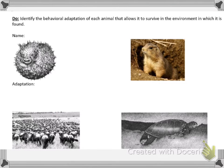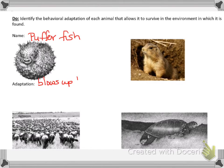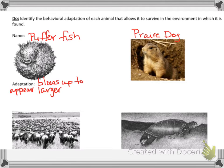Now on your paper we're going to identify the animal and then talk about its adaptation to see what types of behaviors they're taking. The first one is a puffer fish — its adaptation is it blows up to appear larger, which helps scare away predators. The next one is a prairie dog — they burrow to keep out of the hot sun.